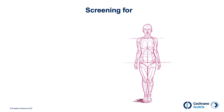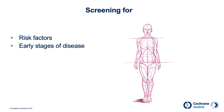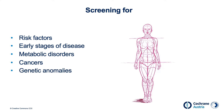Screening can have many different purposes. It can be used to find risk factors for a disease, for example high blood pressure, or to detect a disease early, or to detect metabolic disorders. Screening is also used to detect cancer at an early stage. Some screening examinations begin in the womb — cells of the fetus are examined to determine whether genetic abnormalities are present.